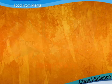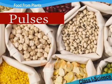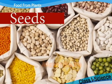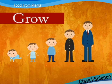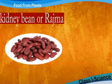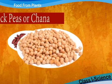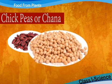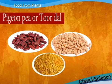Pulses are nothing but seeds. Pulses help us to grow. Some pulses are kidney bean or rajma, chickpea or chana dal, pigeon pea or toor dal.